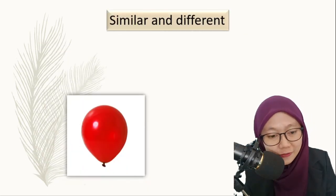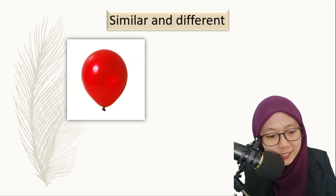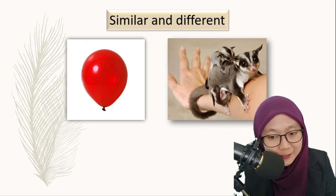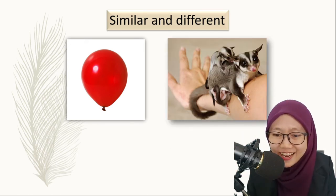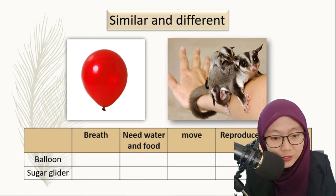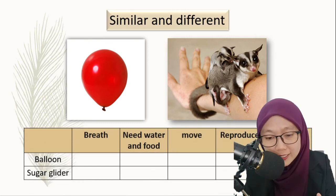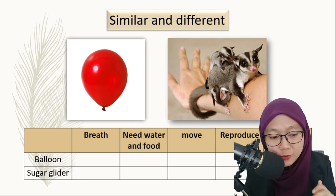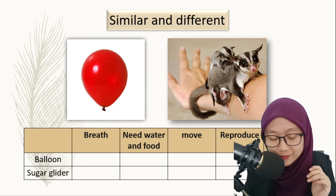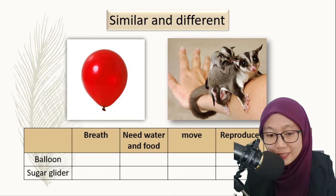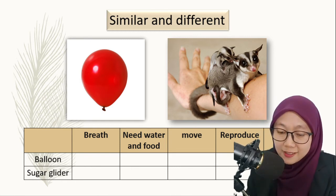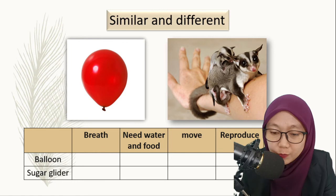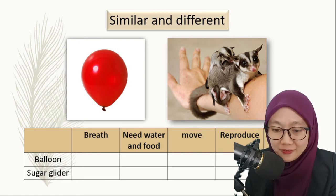Let's move to the next similar and different comparison. That is a balloon and that's a very cute sugar glider. You can do this as an exercise — pause and type your answer in the comment section. State what is the similar and what is the difference between the balloon and the sugar glider, so you can clearly see the difference between living things and non-living things.